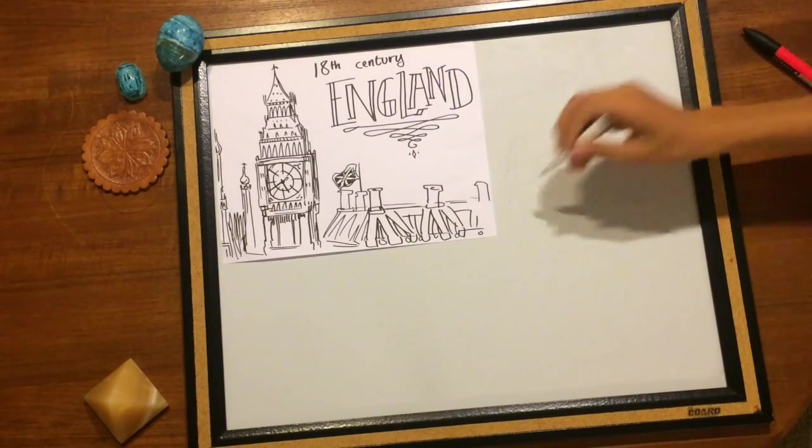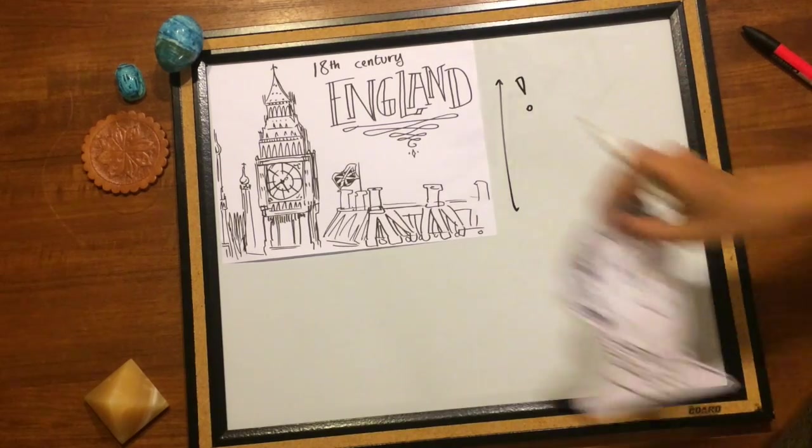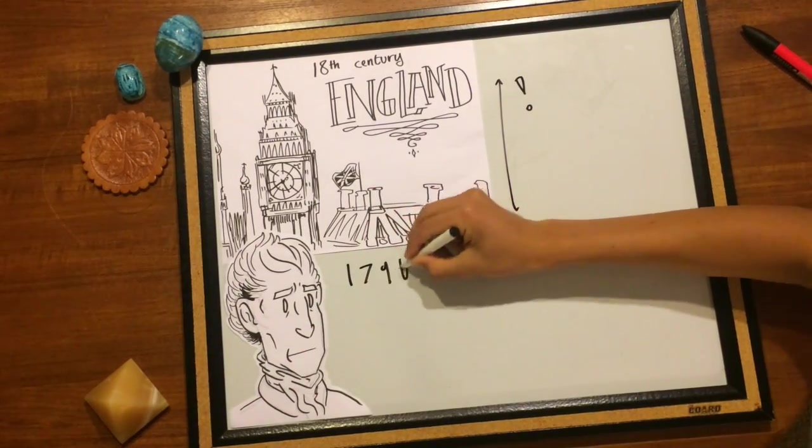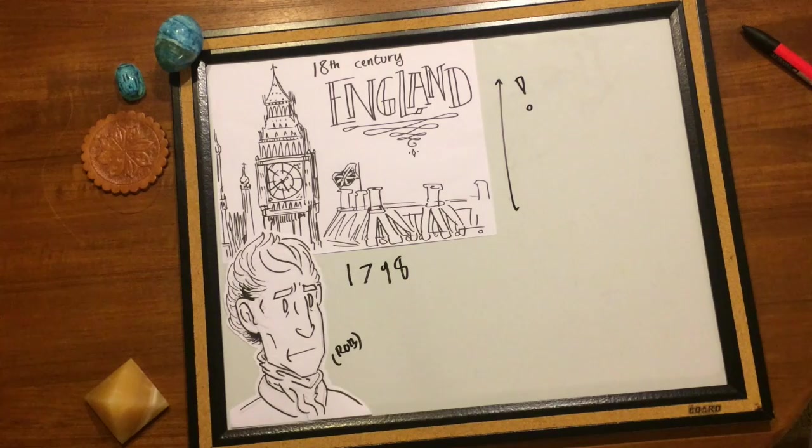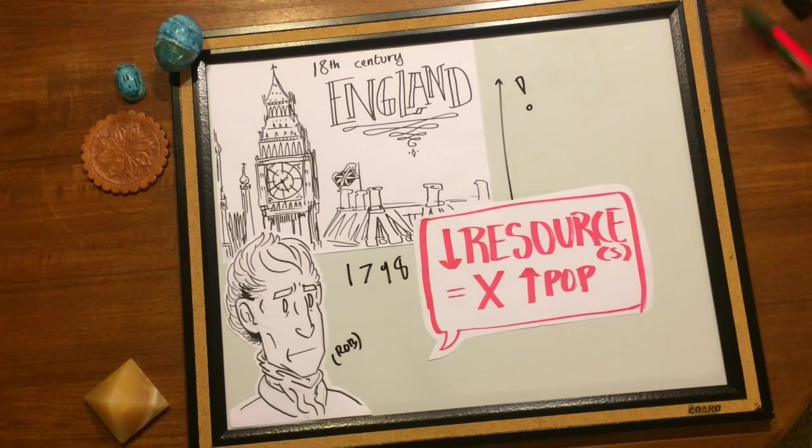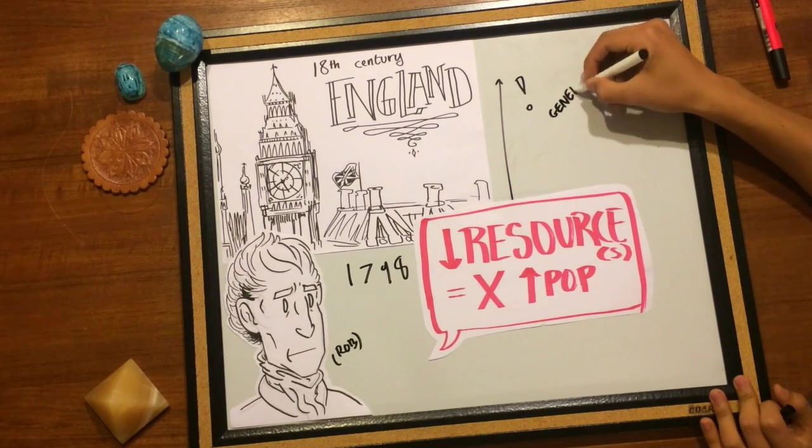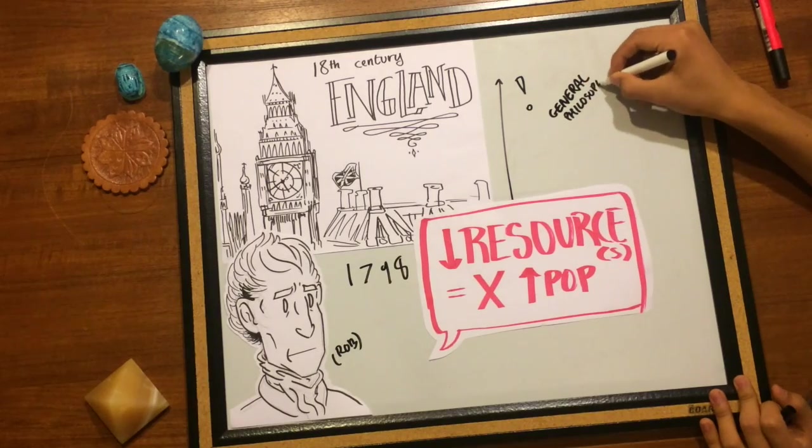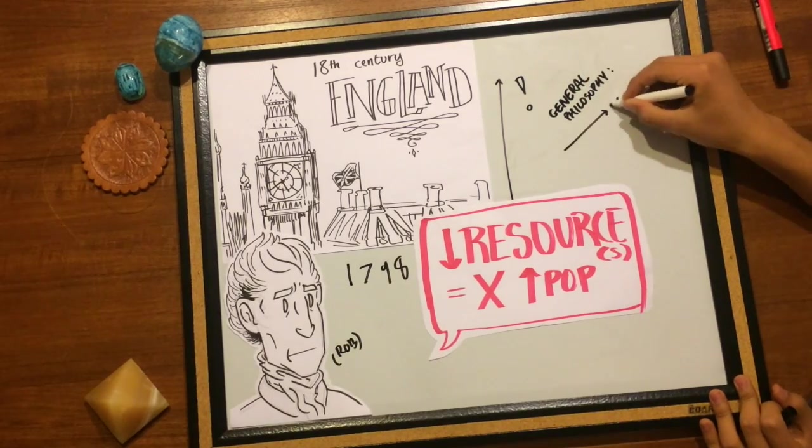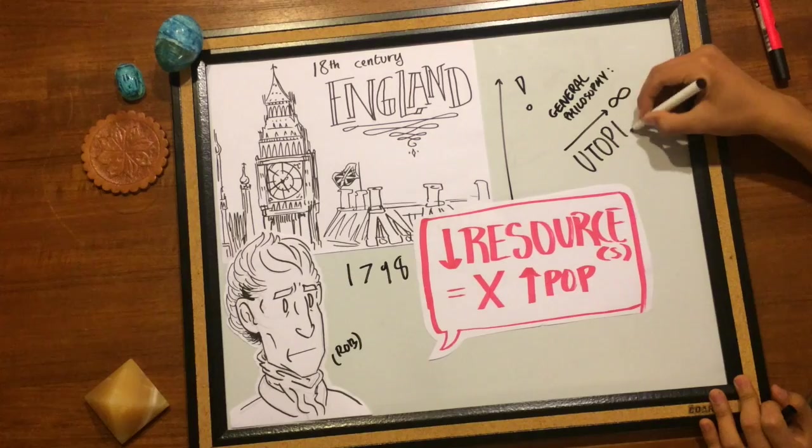Alarmed by the overcrowding in the slums of London, in 1798, Thomas Malthus hypothesized that human population would be faced with lack of resources that prevented sustained growth. This undercut the general philosophy of the time, which assumed that the quality of life would increase ad infinitum and humankind was moving towards utopia.